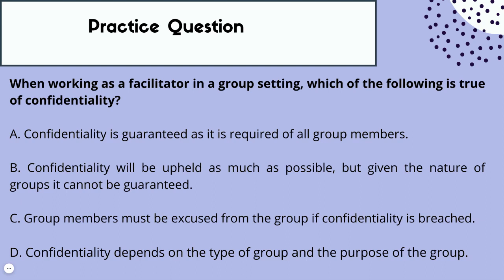Answer C says group members must be excused from the group if confidentiality is breached. That may be true in some cases, but it's not true in all cases — in some situations, the group member may stay. We can't make that blanket statement, so C is also eliminated. We're now down to B or D.